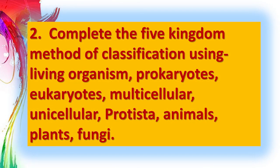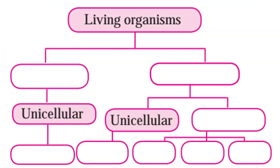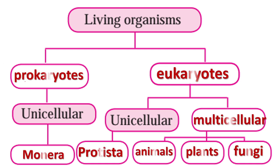Question 2: Complete the five kingdom method of classification using living organisms – prokaryotes, eukaryotes, multicellular, unicellular, Protista, animals, plants, fungi. In the chart: Living organisms divide into prokaryotes and eukaryotes. Eukaryotes split into unicellular (Kingdom Protista) and multicellular (animals, plants, fungi). Prokaryotes go under Kingdom Monera.